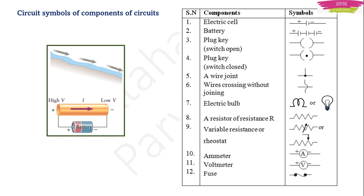An electric cell is denoted with one big terminal (positive) and one small terminal (negative). A battery is represented by a group of such cells. An electric cell is a device that converts chemical energy into electrical energy; the chemical inside produces a small amount of electricity. The difference between a cell and a battery is that a battery is a collection of two or more cells. A single unit is called a cell; two or more together form a battery.